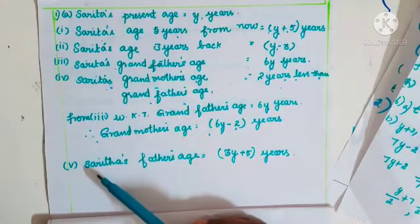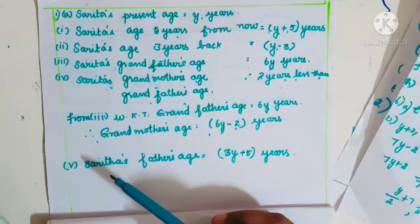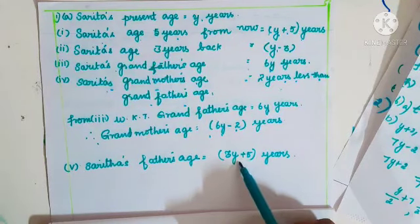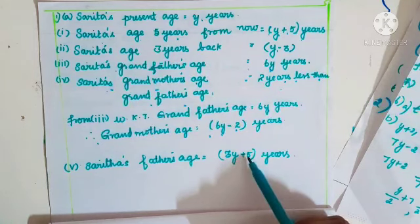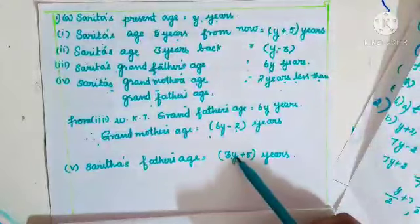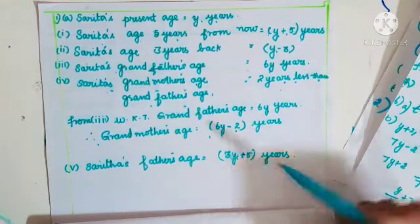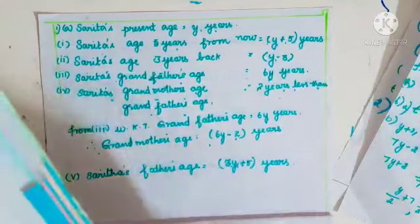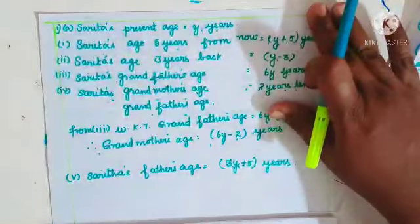Fifth: Sarita's father's age is 5 years more than 3 times Sarita's age. 3 times Sarita's age is 3Y, and 5 years more gives 3Y + 5. With a statement, you arrive at an expression. Read page 234 carefully to capture these situations.